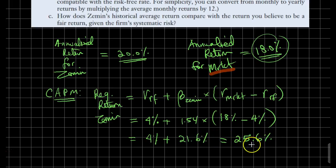So that was the required rate of return for Zemin. However, the realized return is below this value. The realized return for Zemin was 20%. This 20% is less than the required return, so in the previous six months, our stock actually underperformed.